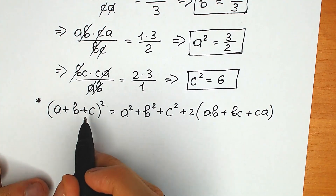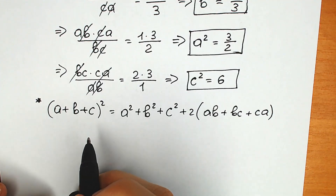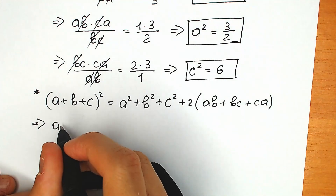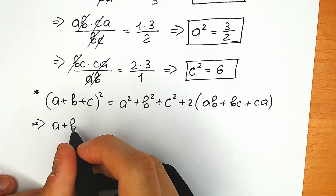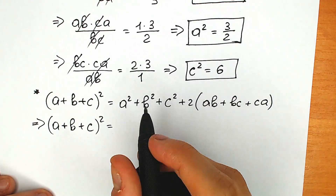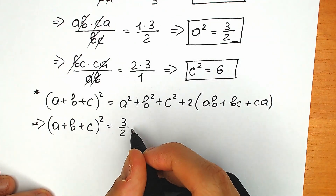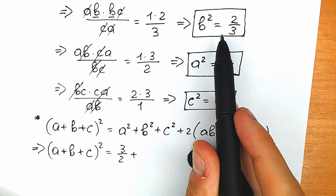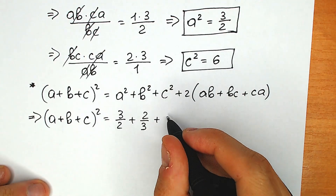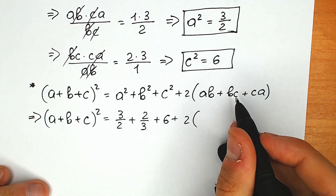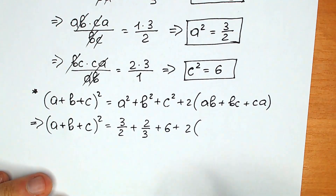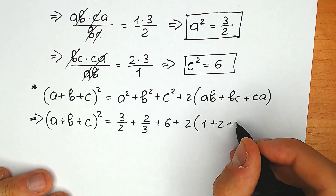We have the expression we need to find, which is a plus b plus c. So let's apply the formula. We have (a plus b plus c) squared equals a squared which is 3/2, plus b squared which is 2/3, plus c squared which is 6, plus 2 times (ab plus bc plus ca), which is 1 plus 2 plus 3.